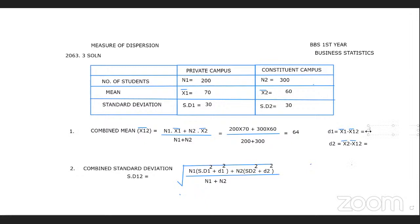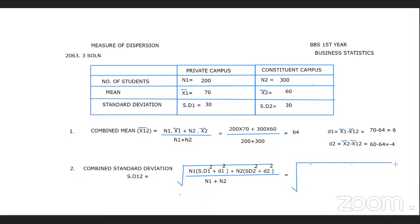So d1 is equal to x-bar1 minus combined mean, which is 70 minus 64 equals 6. And d2 is equal to x-bar2 minus combined mean, which is 60 minus 64 equals minus 4.